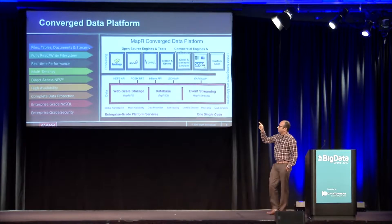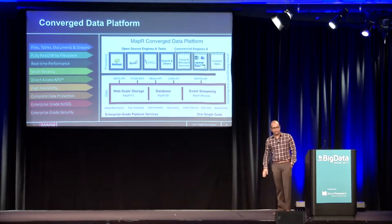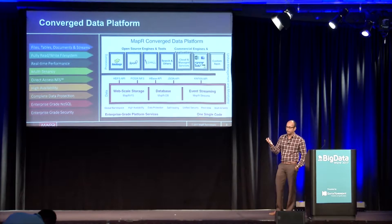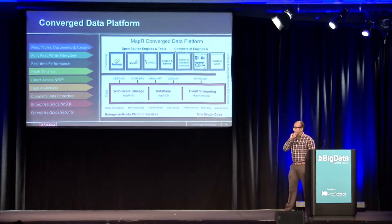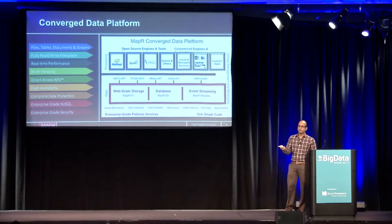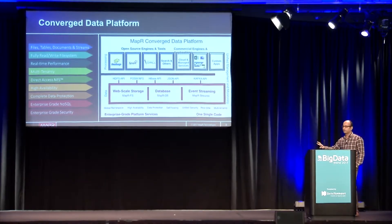With the converged data platform, you can use it as one single data platform in one single cluster — no separate cluster for streams, no separate cluster for the database. It provides web-scale storage supporting both HDFS and a read-write file system, real-time database capabilities with MAPRDB, and event streaming similar to Kafka — all on one single platform and cluster.